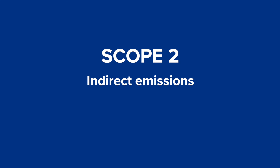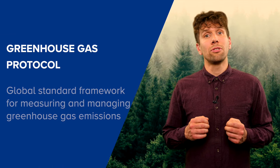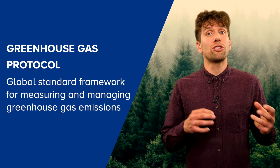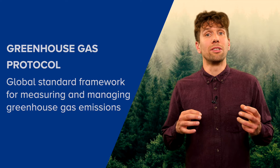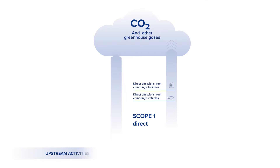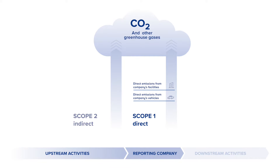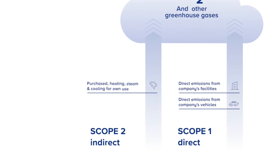Now we come to Scope 2 emissions, which are your company's indirect emissions from purchased energy. According to the GHG Protocol, Scope 2 represents one of the largest sources of greenhouse gas emissions globally, and generally offers an opportunity to significantly reduce emissions. Scope 2 emissions mostly include indirect greenhouse gas emissions from purchased or acquired energy like electricity, steam, heat or cooling, generated off-site and consumed by the reporting company.